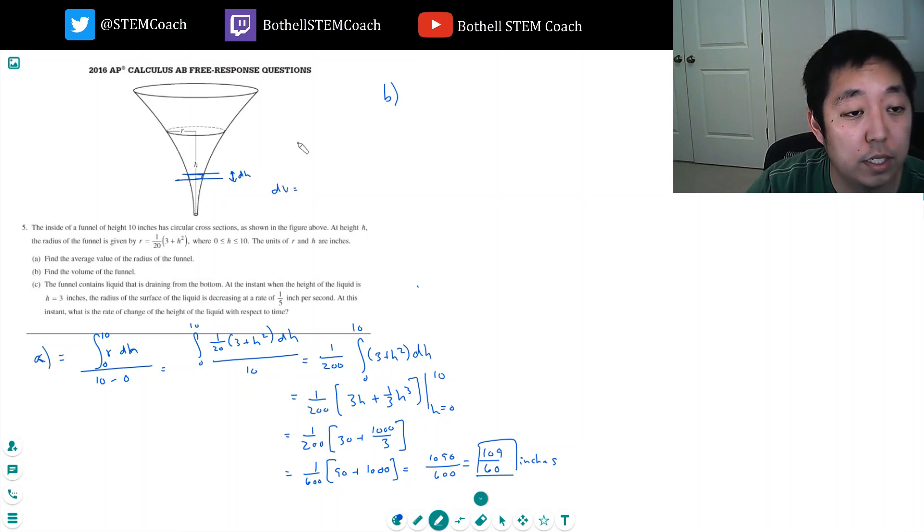So the volume of this disk, if I kind of like enlarge it, and I have r, it's pi r squared. It's the area of the disk times the thickness of the disk. But I need to put this all in one variable. So pi r squared. Pi r squared would be this squared. 1 over 20 (3 plus h squared) squared dh.